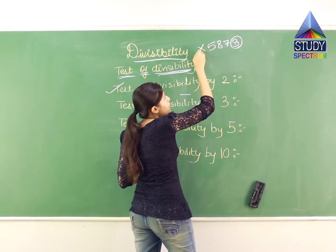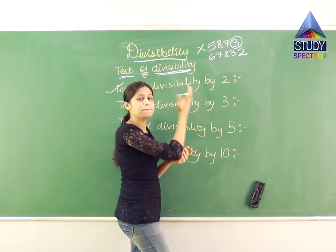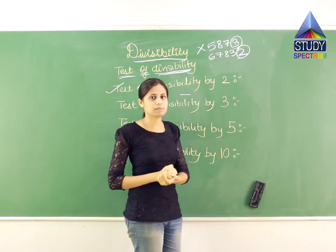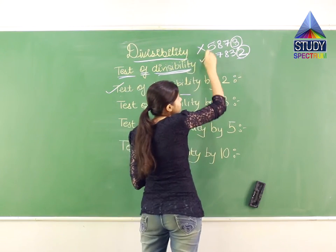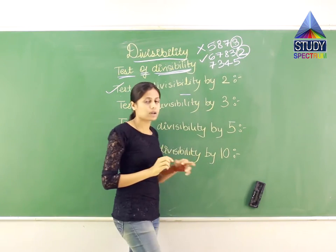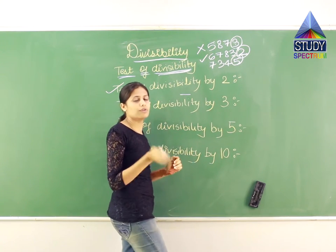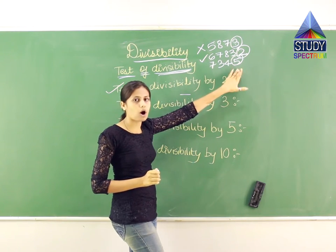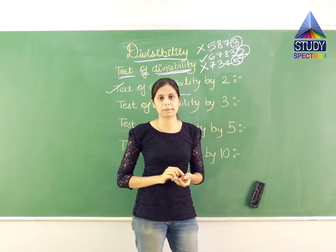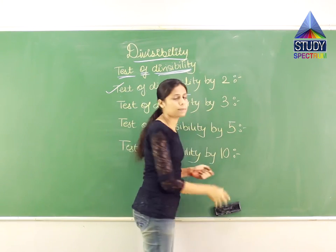So this number is not divisible by 2. Suppose I give you a number whose last digit is 2 — since 2 is an even number, I can say that this number is divisible by 2. Another example: 7,345 — the last digit is 5, which is an odd number, so it is not divisible by 2. Clear with the test of divisibility by 2: even number at the end means divisible by 2; odd number at the end means not divisible by 2.